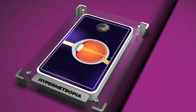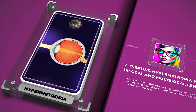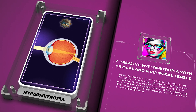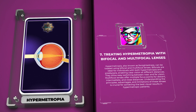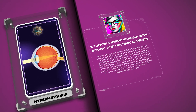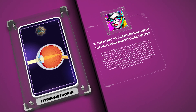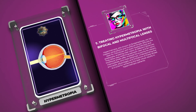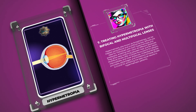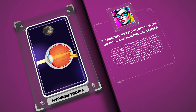Hypermetropia, also known as farsightedness, can be treated using bifocal and multifocal lenses. Bifocals are ideal for individuals with both hypermetropia and presbyopia, enabling clear vision at different distances and allowing easy switching between near and far vision. Multifocal lenses offer multiple focus points for distant, intermediate, and close distances. Understanding the advantages and limitations of these lenses is crucial for achieving the best visual results in hypermetropic patients.